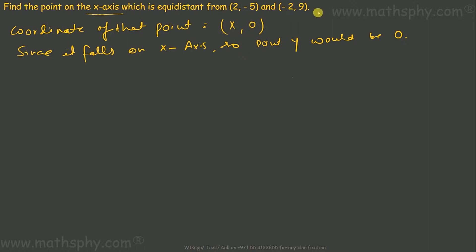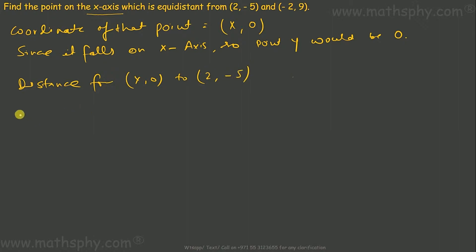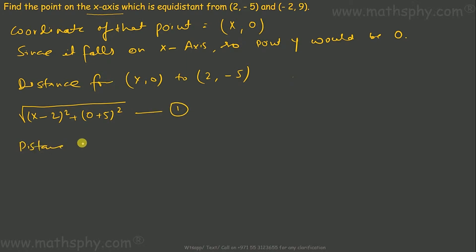This point is equidistant from the two given points. I write distance from (x, 0) to (2, -5): this would be the square root of (x minus 2) whole square plus (0 plus 5) whole square — call this equation 1. And write distance from (x, 0) to (-2, 9).